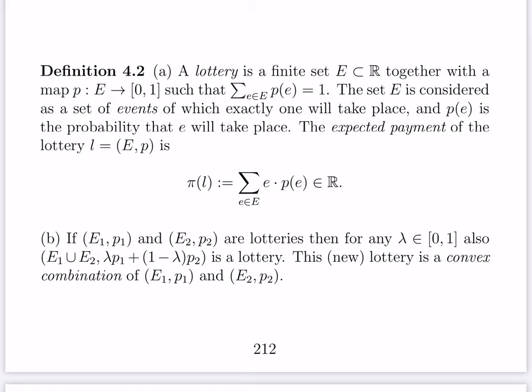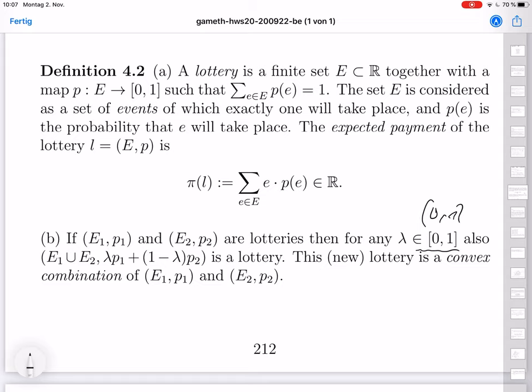The expected payment of the lottery is the expectation value — the sum over all events of the value of the event times its probability. If you have two lotteries, you can also build their convex combination: the new set of events is the union of the two sets, and for each event the new probability is the convex combination of the old probabilities, giving again a valid probability distribution.